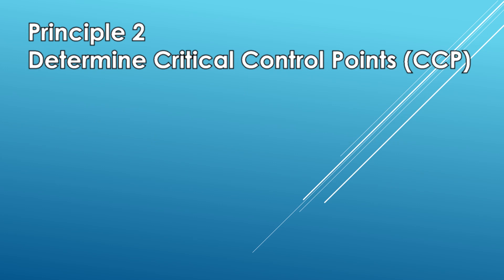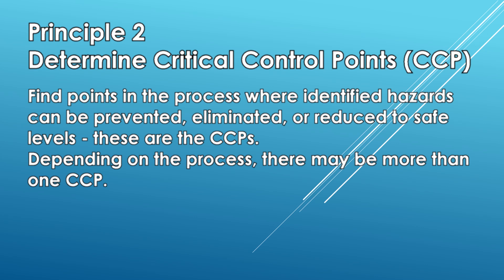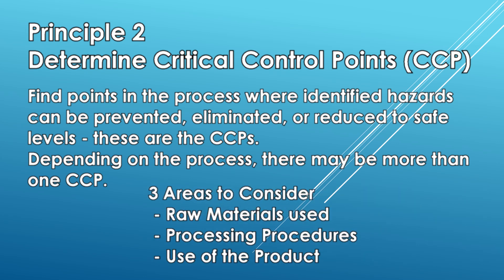Principle 2 — Determine the critical control points: find points in the process where identified hazards can be prevented, eliminated, or reduced to safe levels. These are the CCPs. Depending on the process, there may be more than one CCP. In attempting to identify potential hazards, consider these three areas: the raw materials used, the processing procedures, and the use of the product.